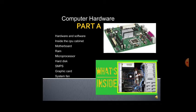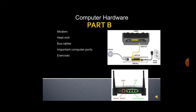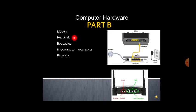Everyone should be aware of what is a central processing unit — it's the brain of the computer where it controls all the activities. In Part A we will learn about the motherboard, RAM, microprocessor, hard disk, SMPS, graphic card, and system fan. In Part B we will learn about the modem, heatsink, bus cables, and important computer ports.